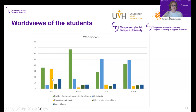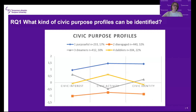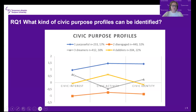What civic purpose profiles were identified? The biggest group — 32% — were disengaged students who scored low on all three dimensions of civic purpose. The second largest group were named dreamers: they had some civic interest and identity, but their activities were equally low as the disengaged. About 20% were called dabblers, scoring highest in civic activity but quite low in interest and identity. The fourth group, purposeful, comprised 17% of students, scoring relatively high on all three dimensions.